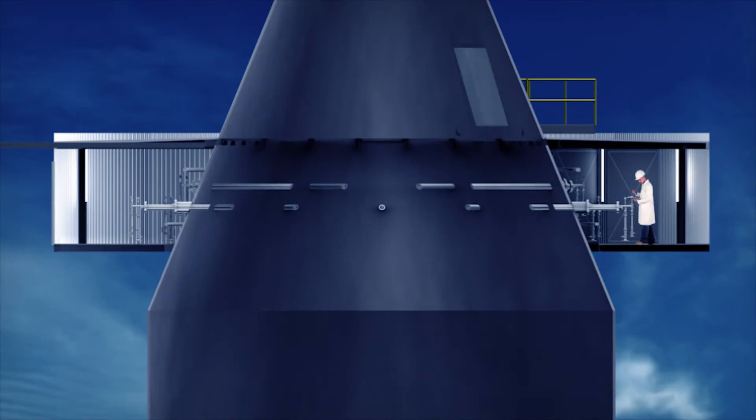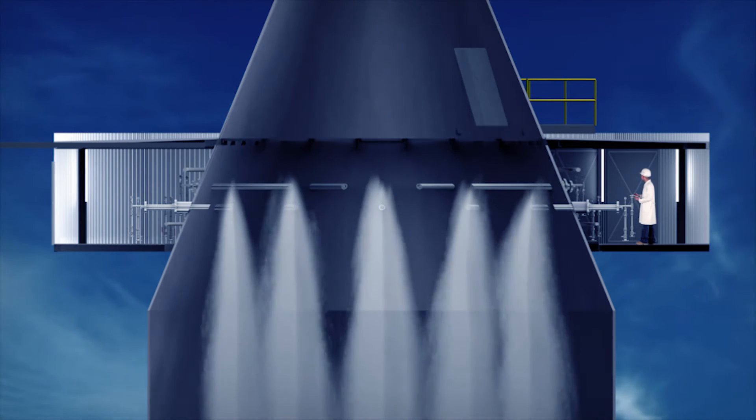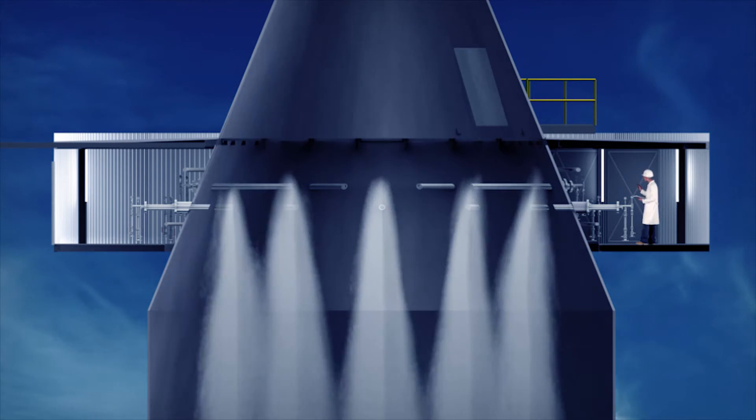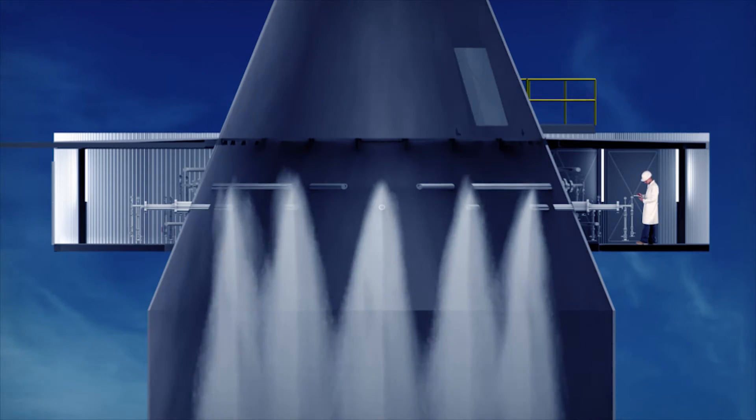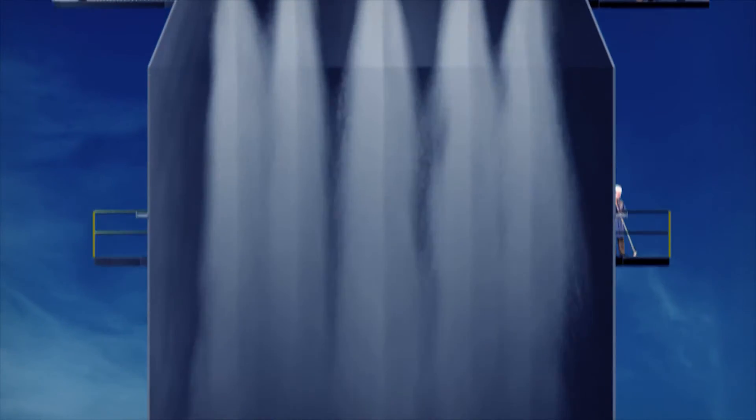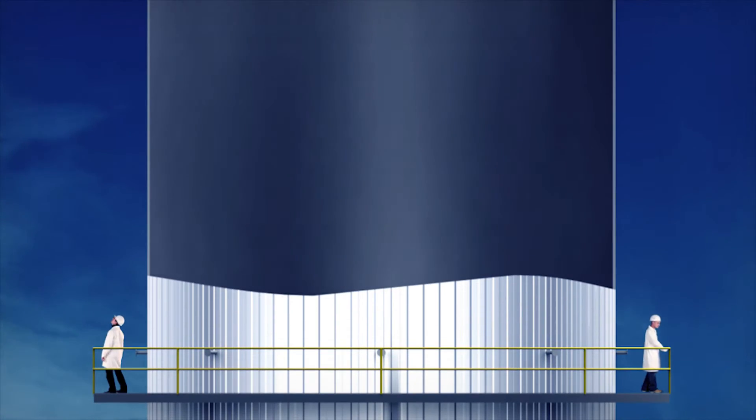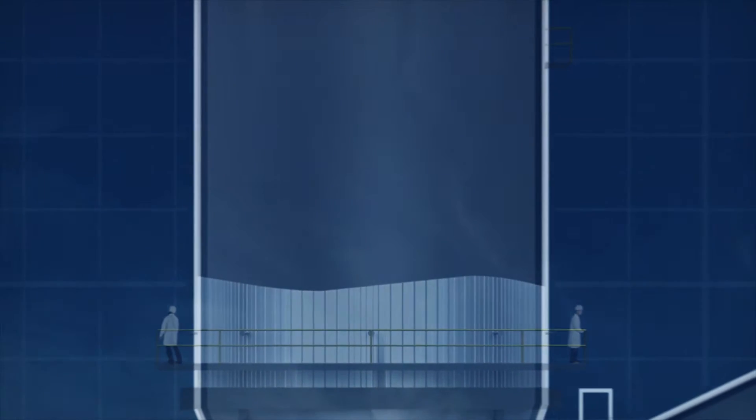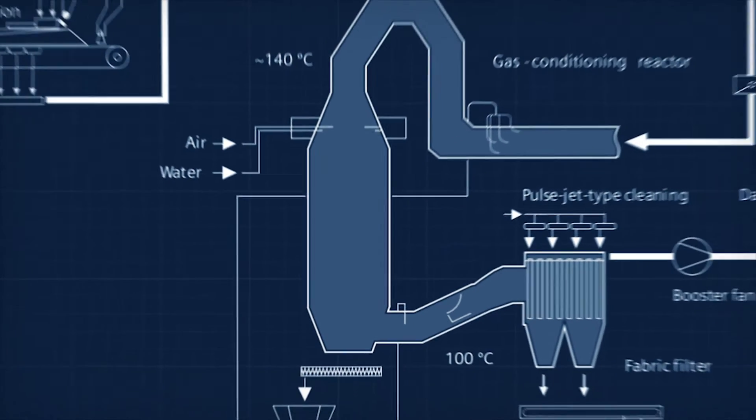In a second step, the gas stream passes to a conditioning reactor where the gas is cooled and moisturized by dual flow water-air nozzles. This accelerates the chemical reactions required for binding and removing sulfur dioxide and other acidic gas components. Temperature peaks are also prevented.